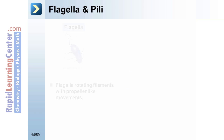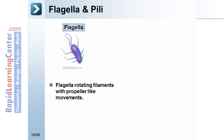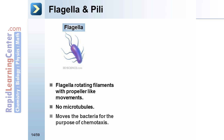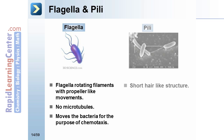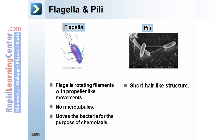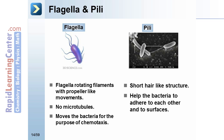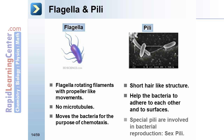Flagella and pili. Flagella are rotating filaments with propeller-like movements, have no microtubules, and move the bacteria for the purpose of chemotaxis. Pili are short, hair-like structures that help the bacteria adhere to each other and to surfaces. Special pili are involved in bacterial reproduction and are known as sex pili.